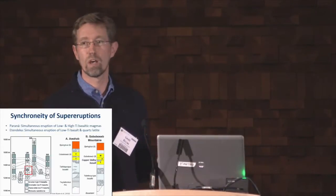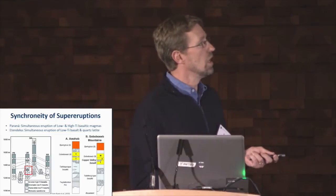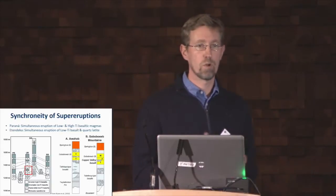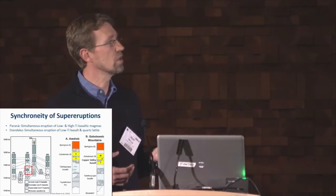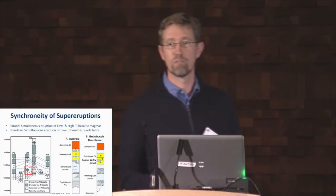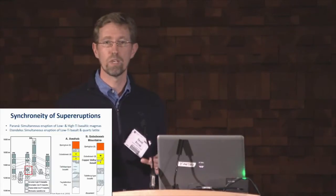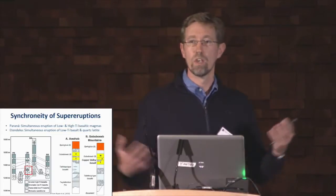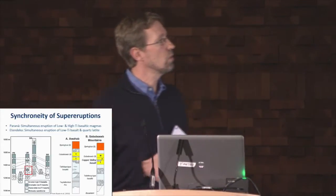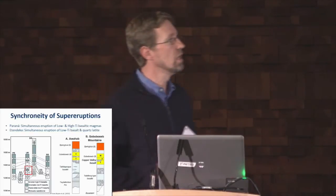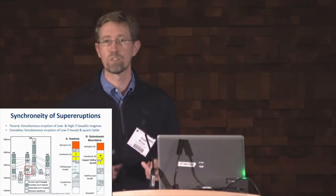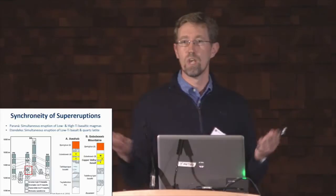In the Paraná flood basalt province in Brazil, sections show high-titanium and low-titanium compositionally distinct flood basaltic lavas interbedded with each other — units 9 and 10 being split apart and interspersed with a very distinct low-titanium lava — implying two chemically distinct lavas were being erupted from widely separated vents at the same time. Likewise, in the associated Etendeka province in Namibia, during the Gulf of Boshef course late-tide eruptions, two chemically distinct basaltic lavas were being erupted across the region simultaneously.